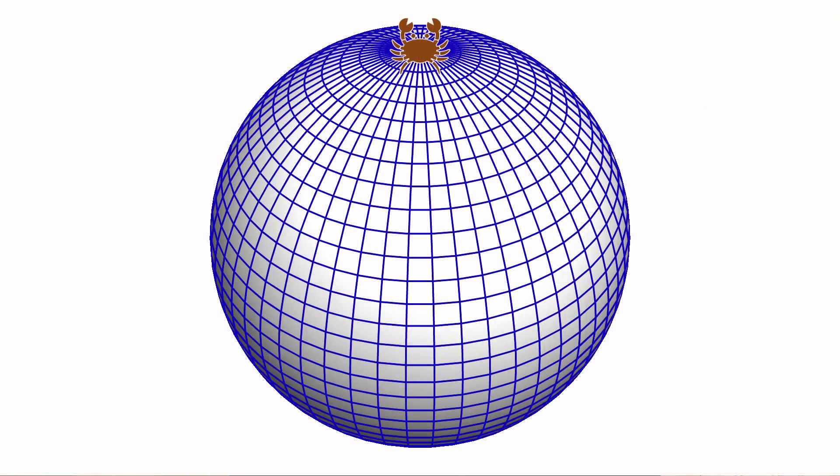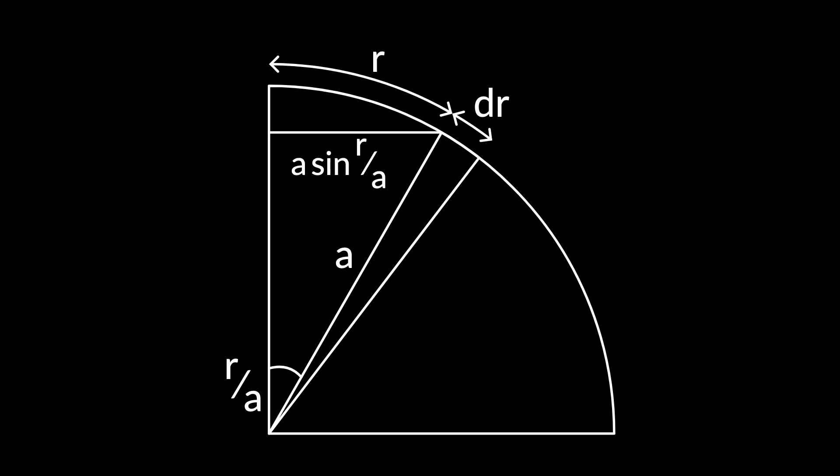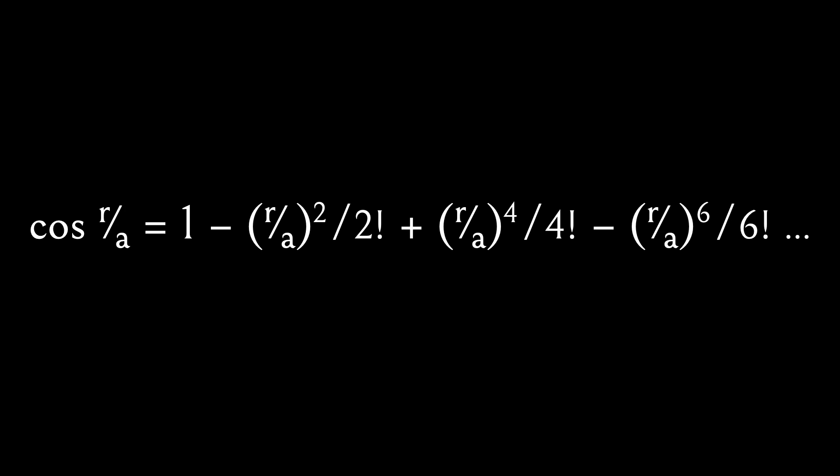To us, with our god's eye view of the crab's two-dimensional space, it's easy to see what's going on. It's obvious that the curvature of the sphere is going to affect how much space the crab covers moving an equal distance in every possible direction. We can even calculate the formula. For a sphere of radius a, the amount of space the crab covers, v, varies with distance r according to v = 2πa² × (1 − cos(r/a)). The cosine in our formula can be expanded into a power series: cos(r/a) = 1 − (r/a)²/2! + (r/a)⁴/4! − (r/a)⁶/6! and so on.